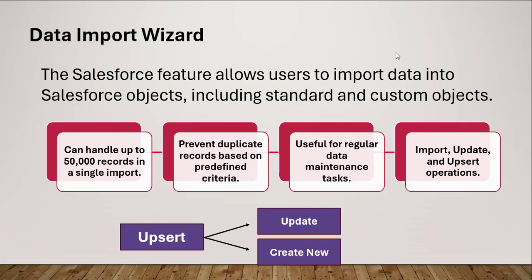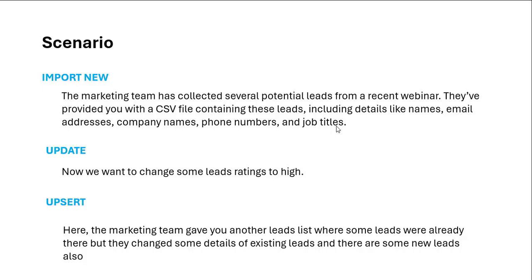Using the Data Import Wizard we can perform different operations: we can import new data, update existing data, and we also have the upsert operation — where we can update existing data, and if the data is not present, it will create new data for that particular object. Now let's take a scenario. I will demonstrate how to import new data, update existing data, and how to use the upsert operation.